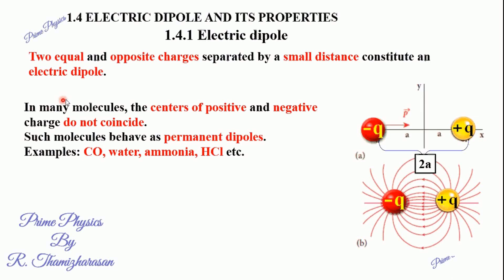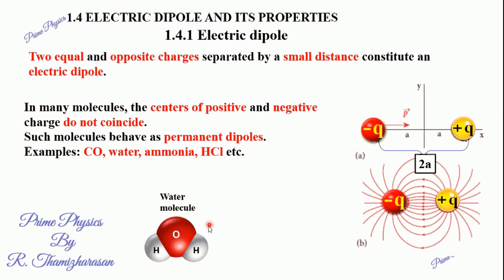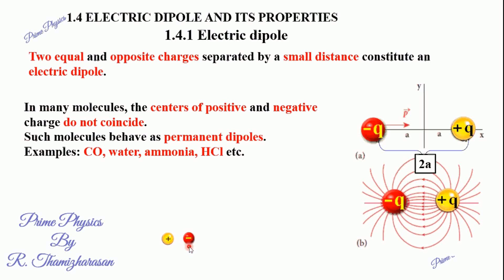In most molecules, the center of positive charges and the center of negative charges do not coincide with each other. This is the Polar Molecule. Examples include CO, water (H₂O), ammonia, and HCl. For water (H₂O), the center of positive and negative charges are separated by a very small distance, so they are considered an Electric Dipole. This is the permanent dipole moment.